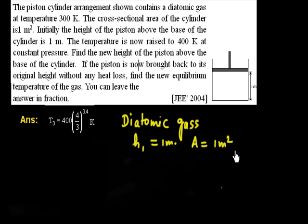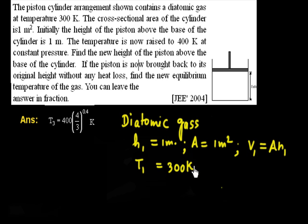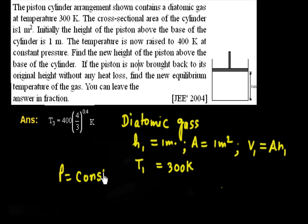Since I know the area and H1, I know the volume: V1 = A × H1. The initial temperature is 300 Kelvin. The temperature is now raised to 400 Kelvin at constant pressure — so we are doing an isobaric process.